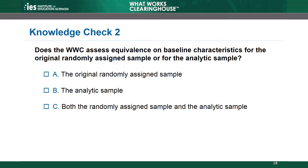Knowledge check 2. Does the WWC assess equivalence on baseline characteristics for the original randomly assigned sample or for the analytic sample? A. The original randomly assigned sample. B. The analytic sample. C. Both the randomly assigned sample and the analytic sample.